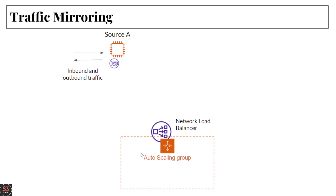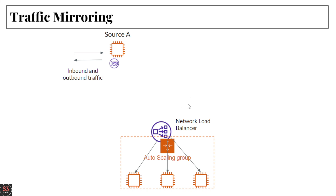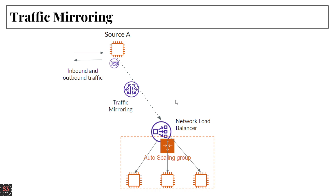Here we have an auto scaling group with three instances connected to the network load balancer. The source is where we capture the data from, and we send that data to the network load balancer to analyze it. A traffic mirroring connection is created, and the data packets from the instance traffic are captured and sent to the network load balancer for analysis.